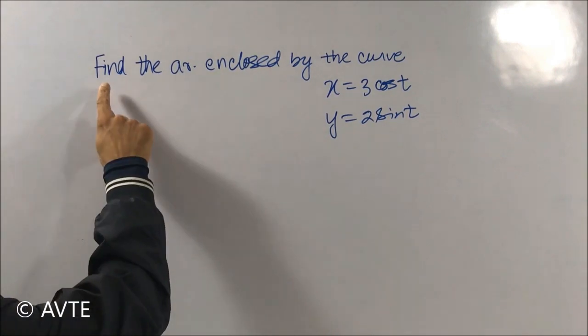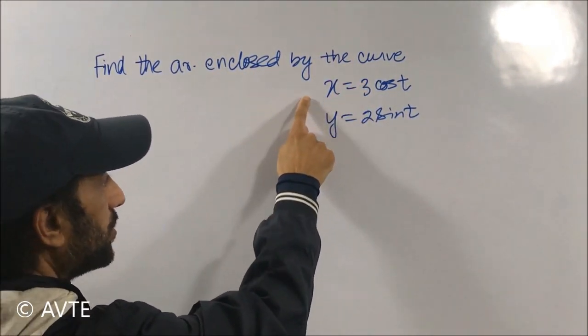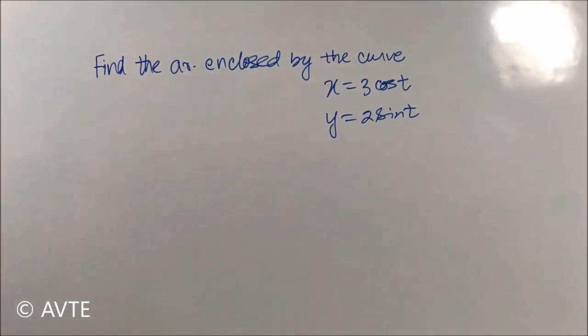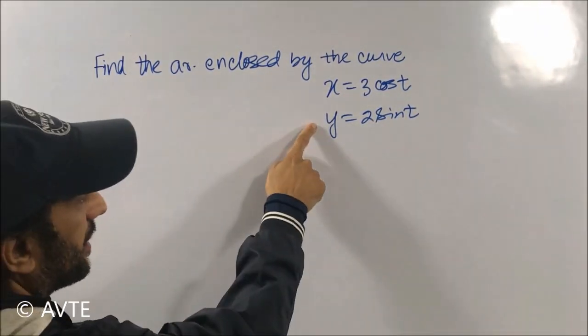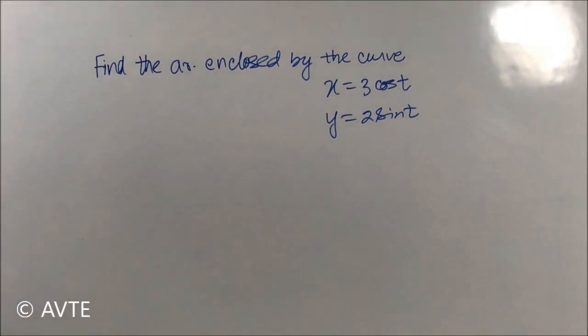Hello students, it's written that find the area enclosed by the curve and you are given two equations. You know that X and Y are related to T, so clearly parametric equations are given. If you are not aware about the parametric equations of ellipse, then is it that you can't solve the question?